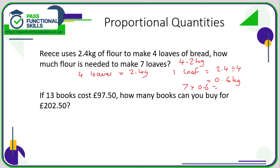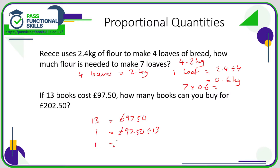You could convert to grams, but using a calculator we can just leave it in kilos and work with the decimals — no problem. If 13 books cost £97.50, how many books can you buy for £202.50? We know 13 books = £97.50, so one book costs £97.50 divided by 13. Typing that into the calculator gives us £7.50 per book.